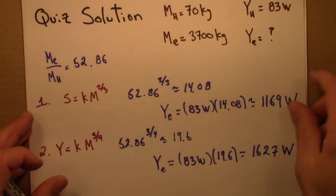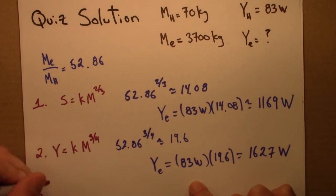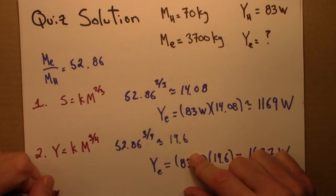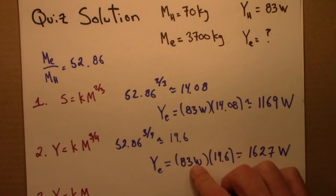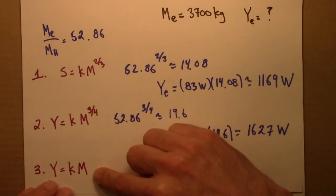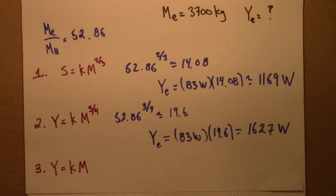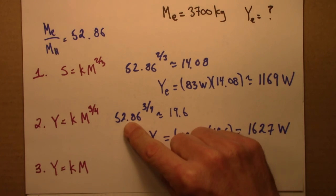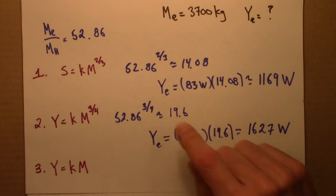And lastly, just for fun, this wasn't in the quiz. But suppose that metabolic rate happened to be just simply proportional to mass. That's the idea that's clearly wrong because we're not taking into account heat dissipation at all. If that was the case, then this 52.86 would be raised to the 1, i.e. it would still be 58.6,